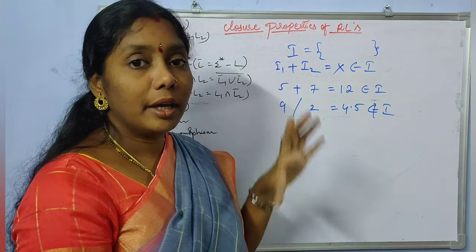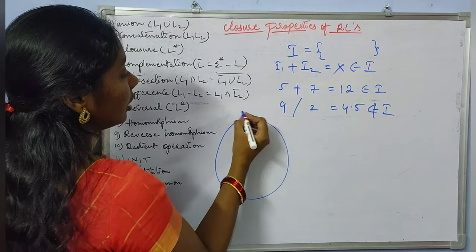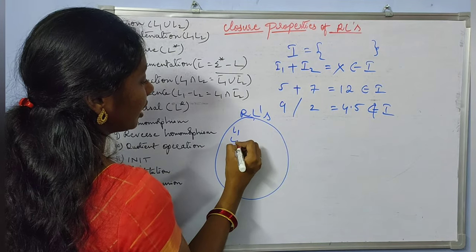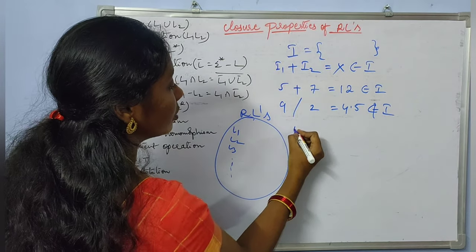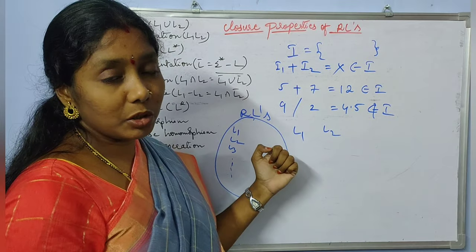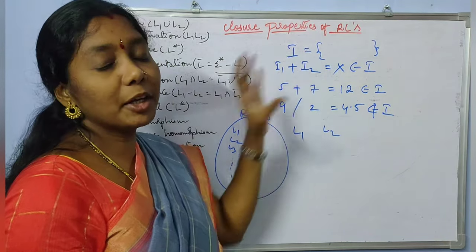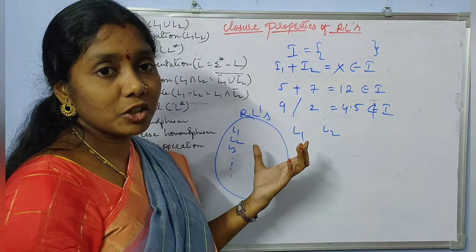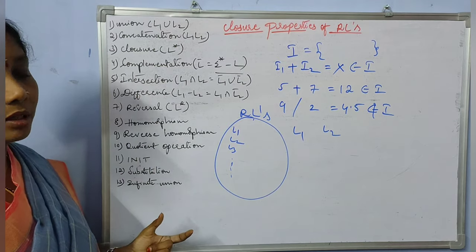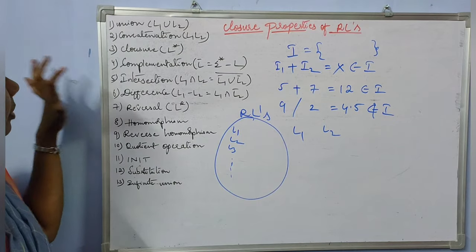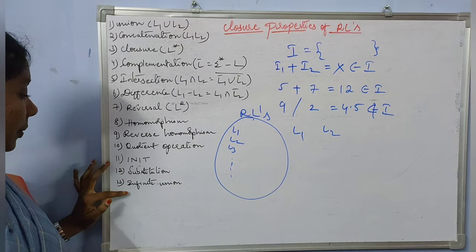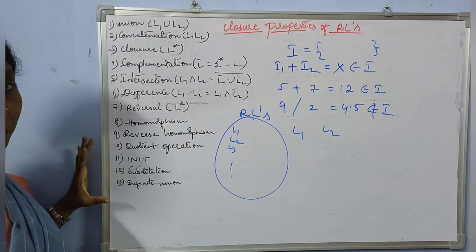Now coming to our topic, closure properties of regular languages: the same concept is applied to regular languages. Here we consider the set of regular languages, and here is the list of operations which we can apply on languages: union, concatenation, closure, complementation, intersection, difference, reversal, homomorphism, reverse homomorphism, quotient operation, init, substitution, and finally infinite union.